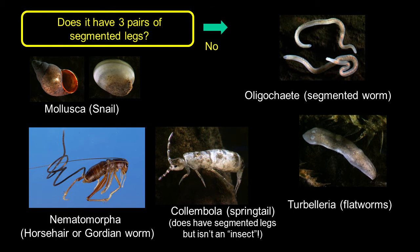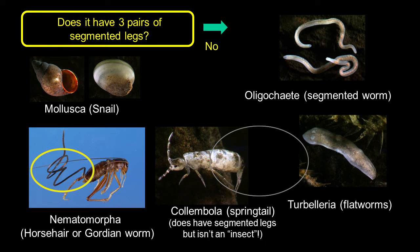Lots of species don't have any legs at all — we've already talked about snails. There are also worms and flatworms, there's also Collembola, and there's a thing called Nematomorpha, which are Gordian worms. Some years ago I had someone ring me up who said they had something that looked like a tiny little eel, and I thought immediately, well, this is probably a Gordian worm — a Nematomorpha.